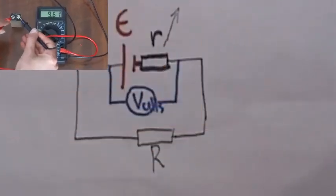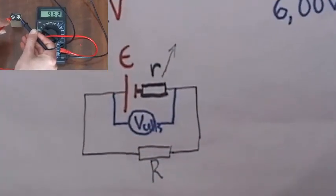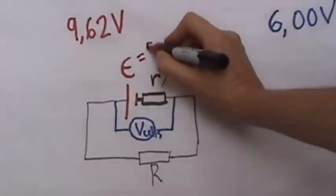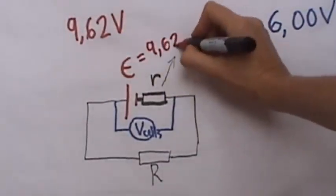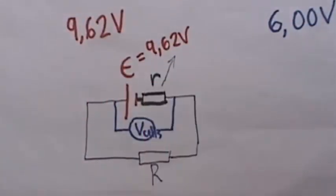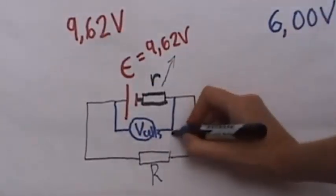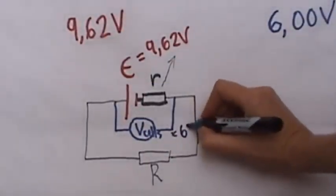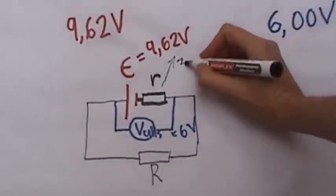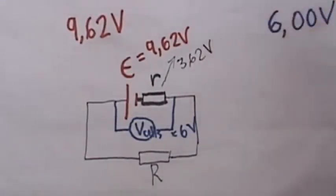So in the practical we've just done we saw that the EMF was 9.62 volts whereas terminal potential difference was only 6 volts which tells us that the difference 9.62 minus 6 which is equal to 3.62 volts that's how much voltage the battery itself took.